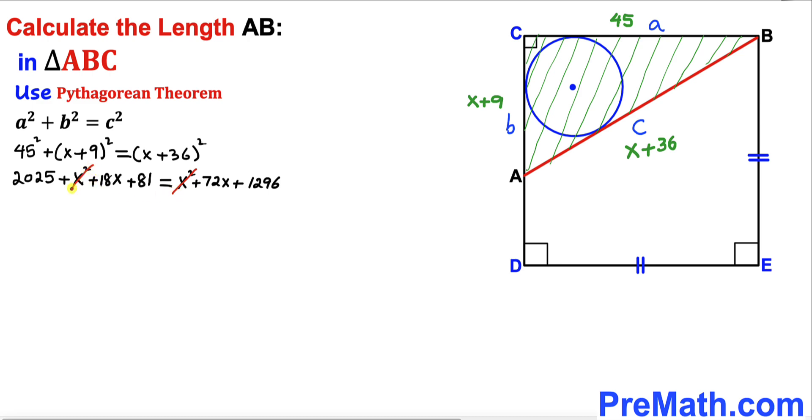On the left hand side, that is going to give us 18x + 2106 = 72x + 1296.